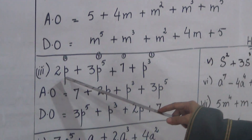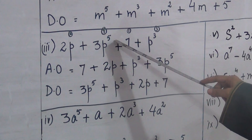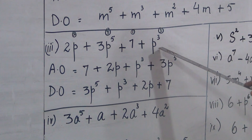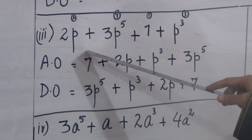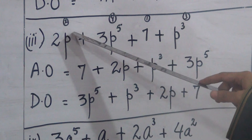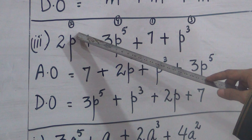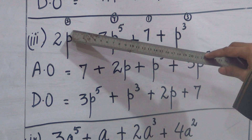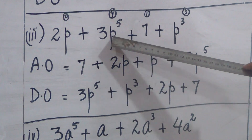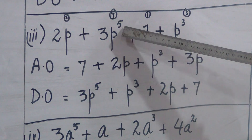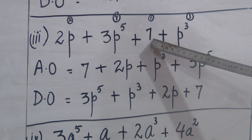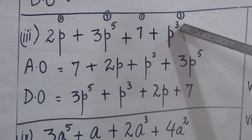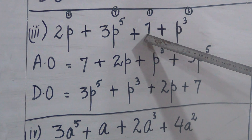Now the third expression is 2P plus 3P raised to the power 5 plus 7 plus P cubed. We have to arrange this expression with respect to variable P. P is the variable. Here the power of P is not visible, so there is a hidden 1. Here the power of P is 5.